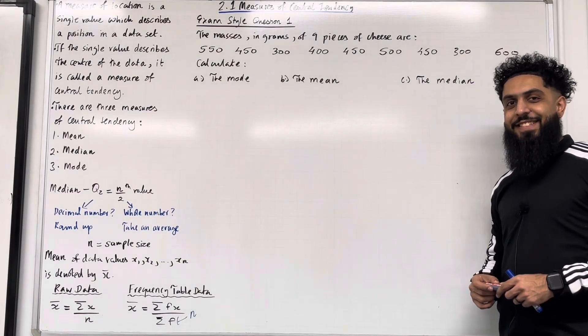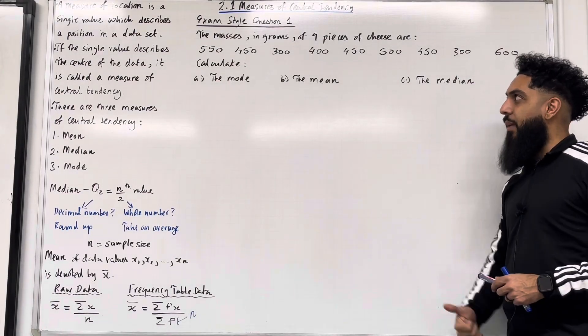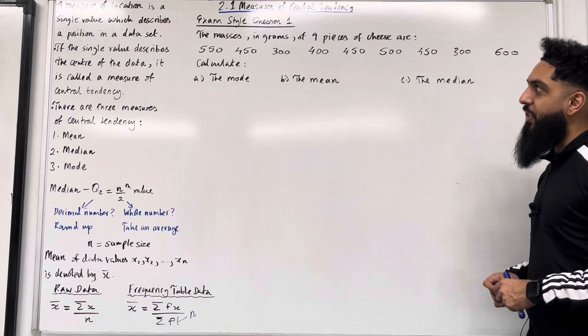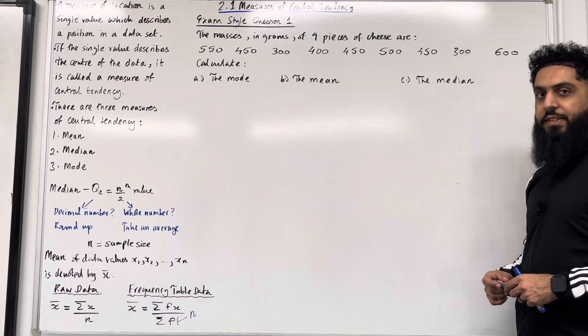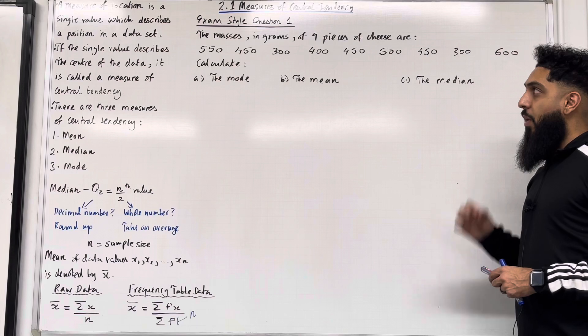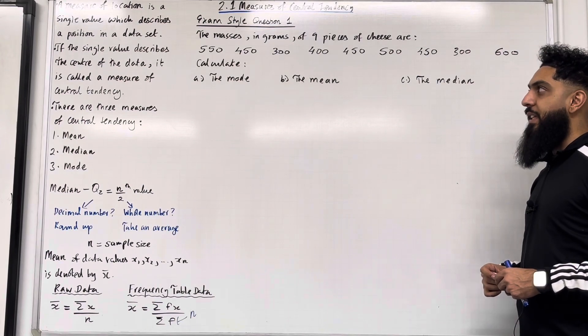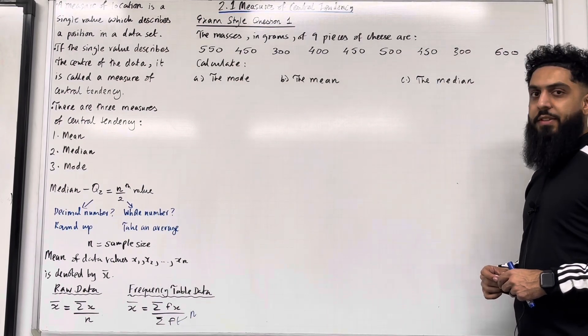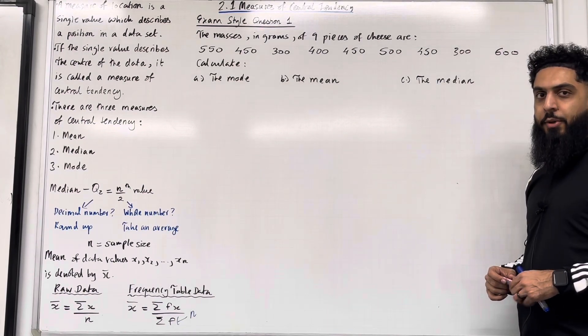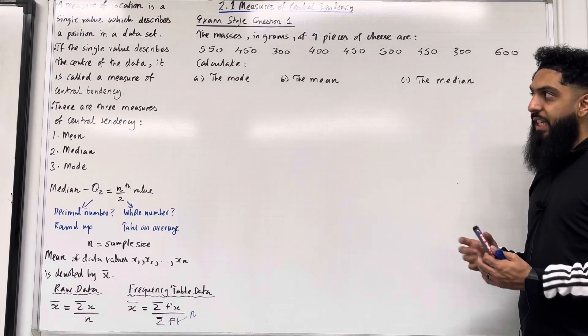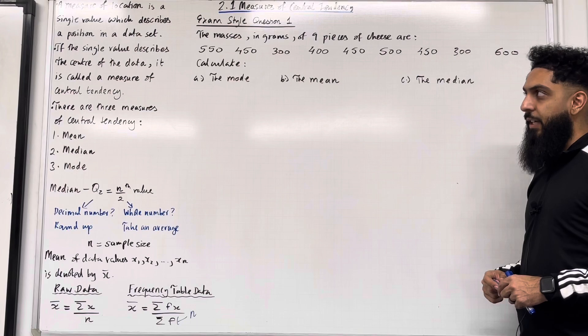Welcome back ladies and gents. In this YouTube video I'll be looking at 2.1 measures of central tendency. 2.1 represents Chapter 2, Section 1 of the Pearson A-Level Applied Maths 1 textbook. Let's go through the key facts of this section.